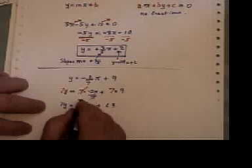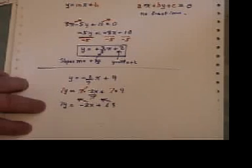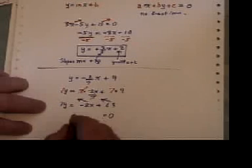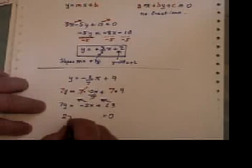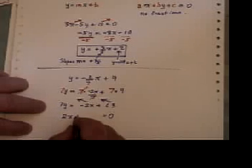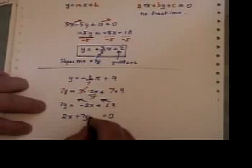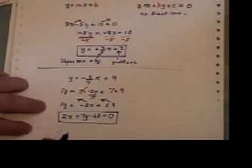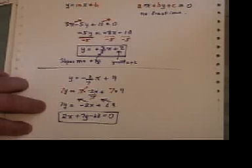Now I just make one side zero. I've got rid of all the fractions. Now what I'm going to do is make the right hand side equal to zero. Minus 2X becomes plus 2X, and I usually put it first. Plus 7Y did not change sides, so it stays plus 7Y. Plus 63 becomes minus 63. And we now have taken it and changed it into standard form of the equation.